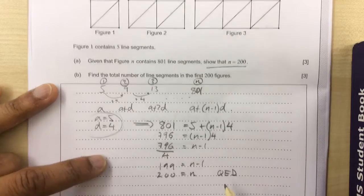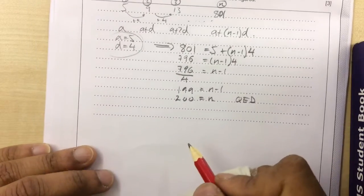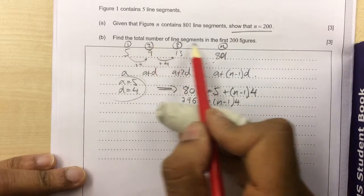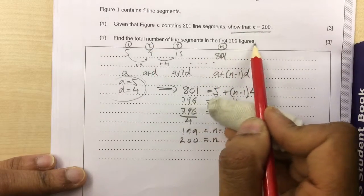QED. So the next part is asking, find the number of line segments in the first 200 figures.